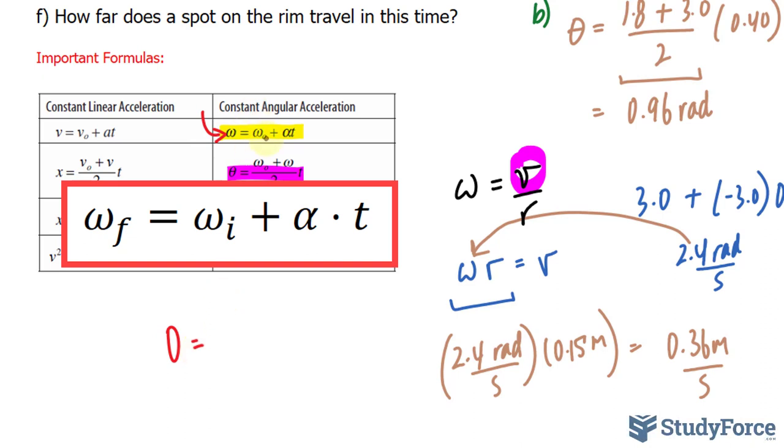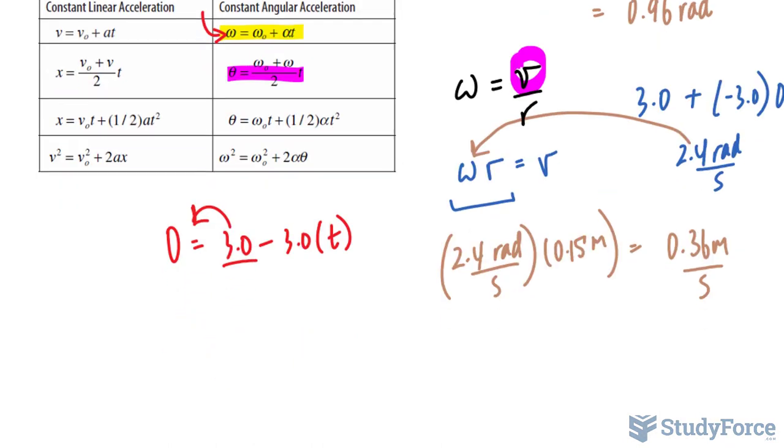And the initial being 3.0 minus 3.0. I simply wrote down minus instead of plus minus, and the time is what we're looking for. So, bringing this term over to the left side, I'm isolating for t here, I get negative 3.0 is equal to negative 3.0 t, and dividing both sides by negative 3.0 makes 1 second. So, it takes 1 second for this to come to a stop.